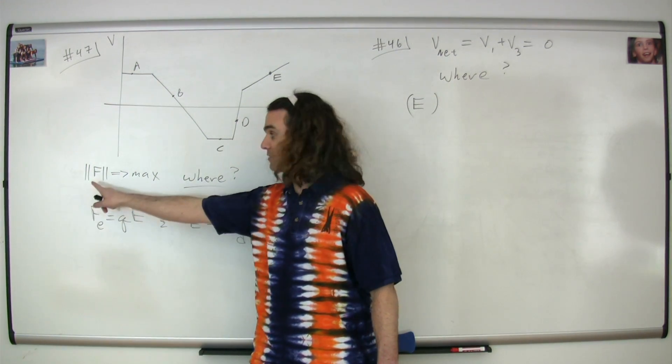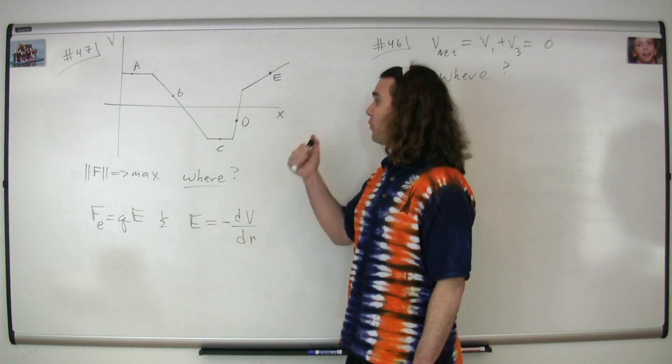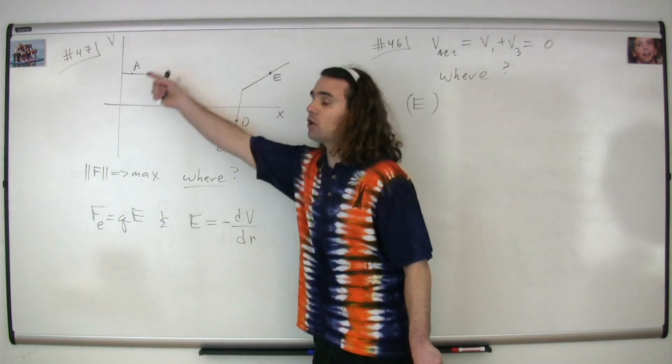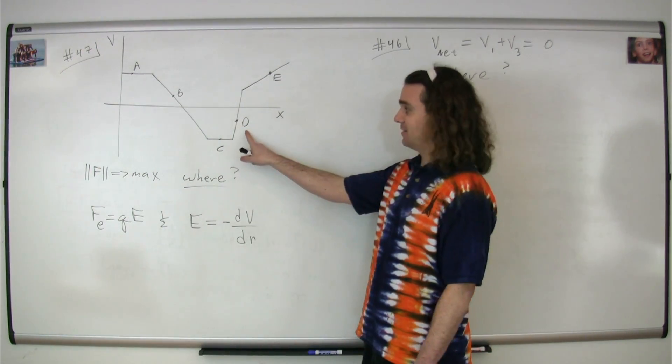So the greatest electric force, or greatest magnitude electric force, is going to be where you have the greatest rate of change of the electric potential with respect to position, or the greatest slope of the graph up here. And that location is d.